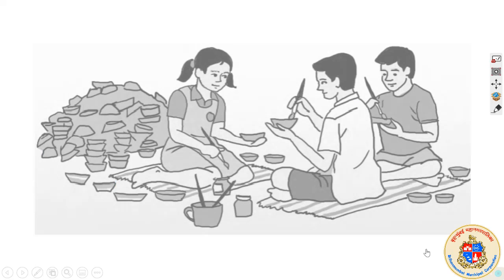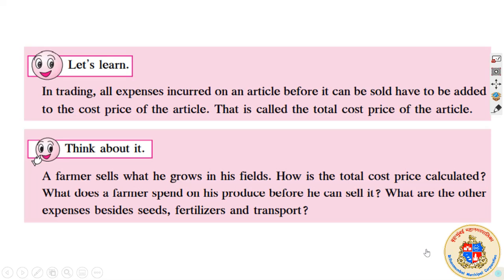Another thing you learned was: whenever we are calculating the cost price, it will include all the things — all the expenses that you incurred for procuring that particular item. The cost price depends upon all expenses incurred while bringing that article to the shop. In the case of a farmer, he should think about the expenditure for seeds, fertilizers, transport, plowing, etc., which all together make the total cost price.